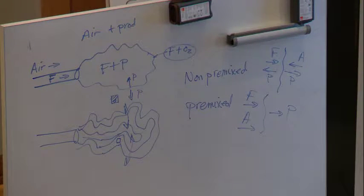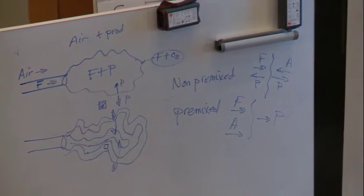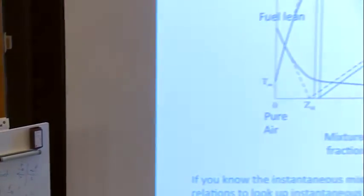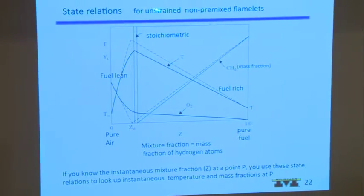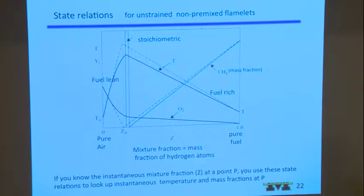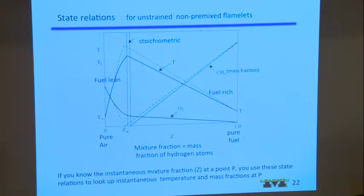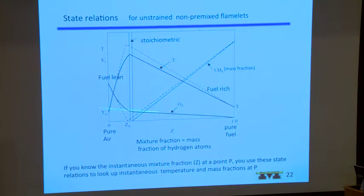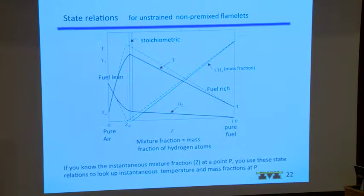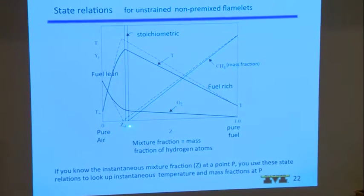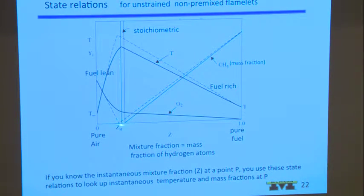This state relation is generated by Chemkin for a counterflow — starting with an unstrained non-premixed flame at very low strain rate, and then you can run Chemkin for a strained flame. Many of you may have run Chemkin where you have fuel and air coming at each other in a counterflow situation and you can generate this map. Following on what I said last time, if you know Z you know the mass fraction of O2. We were always on the lean side — between pure air and stoichiometric. If I knew Z was this number I could go to this black line and find Y_O2.